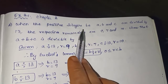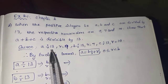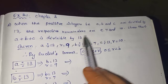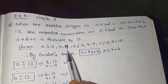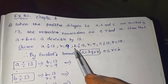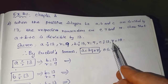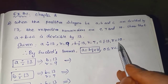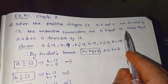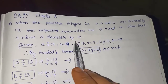When the positive integers A, B and C are divided by 13 — that means when A is divided by 13, the remainder is 9. When B is divided by 13, the remainder is 7. When C is divided by 13, the remainder is 10. According to the given conditions, we have to show that A plus B plus C is divisible by 13.